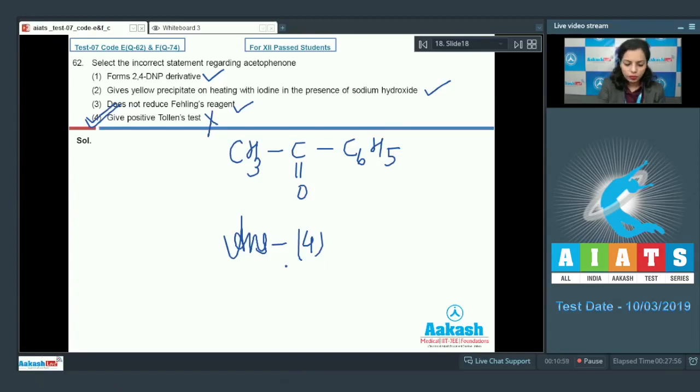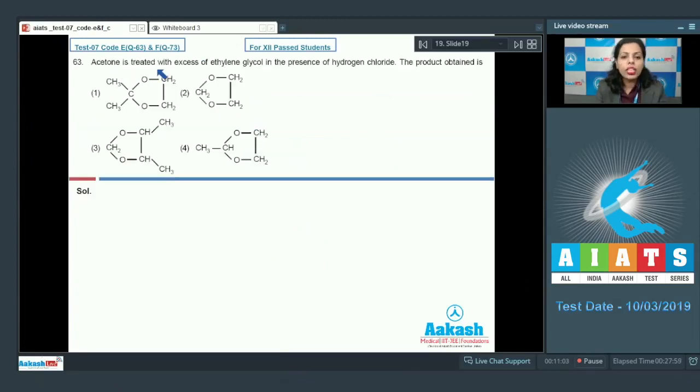After this, question number 63, acetone is treated with excess of ethylene in the presence of hydrogen chloride. The product obtained is, we have acetone. This is acetone, you know.